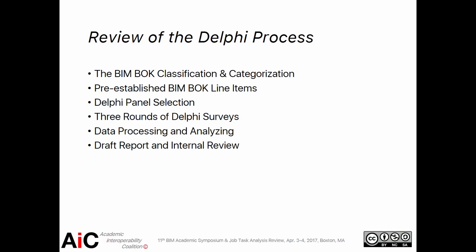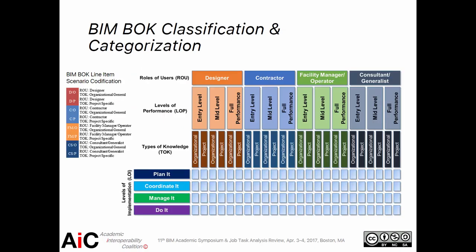The Delphi process is pretty standardized, and we followed the literature review very well. We're going to talk about the overall BIM Body of Knowledge classification and categorization and the panel selection process. We'll discuss the three rounds of Delphi surveys we conducted and show the final results of the data collection. The BIM Body of Knowledge classification and categorization is basically a framework trying to holistically represent the knowledge in BIM implementation.